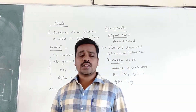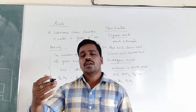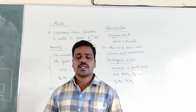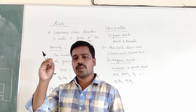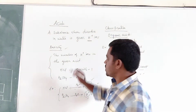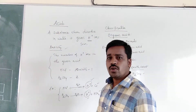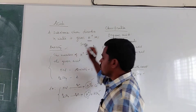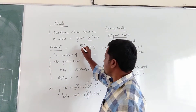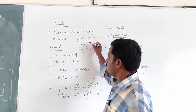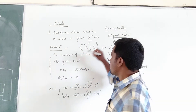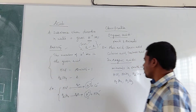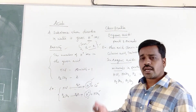Depending upon certain characteristics we can identify a substance as an acid. The important characteristics are: acids are sour in taste, and they convert blue litmus paper to red. These are the two important properties or characteristics of acids. Inorganic acids are again classified into two types: strong acids and weak acids.